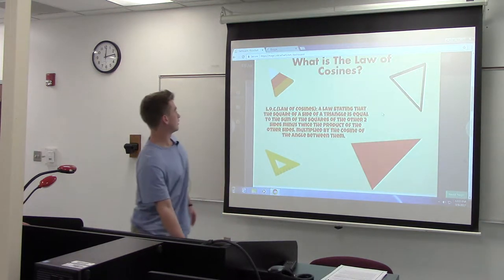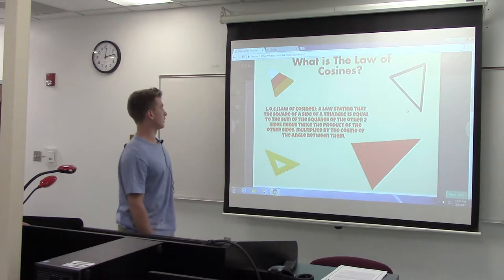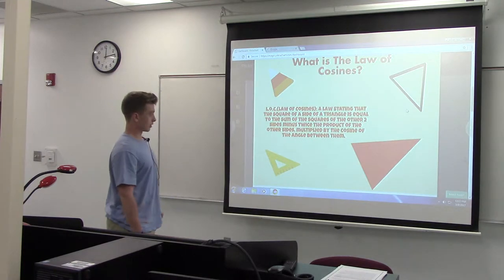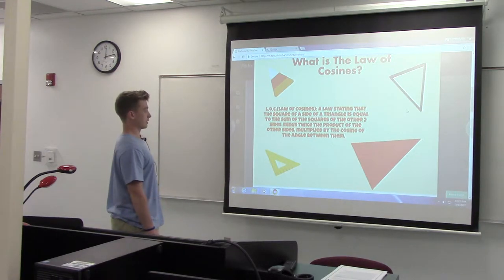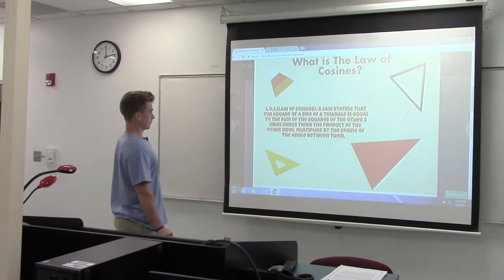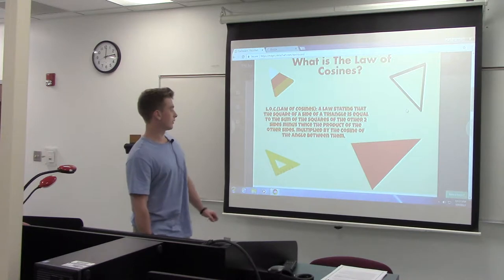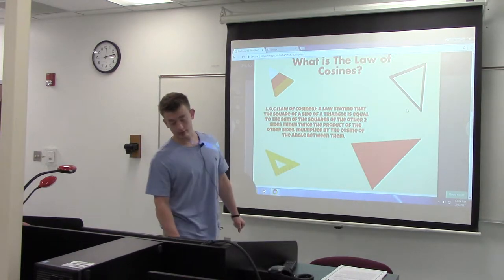Okay, what is the Law of Cosines? The Law of Cosines is a law stating that the square of a side of a triangle is equal to the sum of the squares of the other two sides minus twice the product of the other sides multiplied by the cosine of the angle in between them.